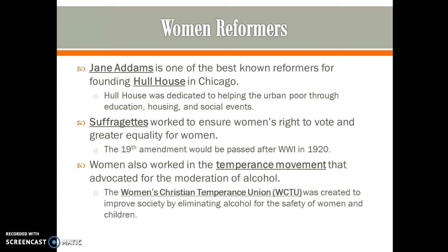When women were seeking the right to vote, a group called the suffragettes formed, working to ensure women's right to vote and greater equality for women. One of the best-known suffragettes was Alice Paul, a militant suffragette who chained herself to the White House hoping the 19th Amendment would be passed — which it wasn't until 1920, after women had served in roles supporting the government during World War I. Another big issue for women was the temperance movement, which advocated for moderation — and ultimately elimination — of alcohol. Women believed alcohol led to wife-beating, mistreatment of children, and breakup of families. They created the Women's Christian Temperance Union (WCTU) to eliminate alcohol for the safety of women and children, ultimately succeeding with the passage of the 18th Amendment.